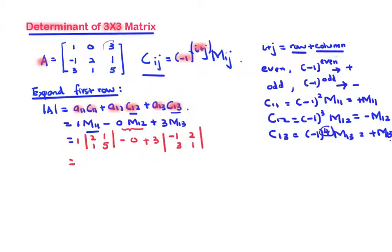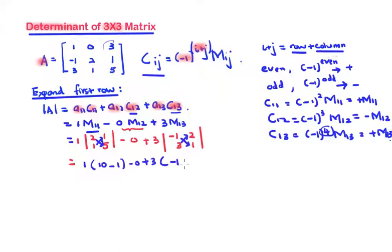Evaluate each minor. 2 times 5 is 10, minus 1, so m11 gives 9. The middle term is 0 so it is skipped. For m13: negative 1 times 1 is negative 1, minus 3 times 2 is negative 7. Then 3 times negative 7 is negative 21. The total is 9 minus 0 plus negative 21, which equals negative 12.